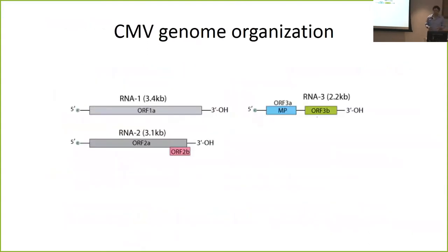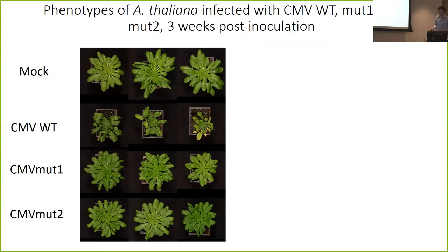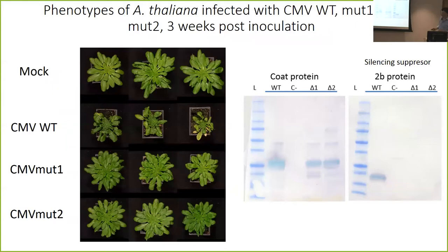To study this, our model is cucumber mosaic virus, or CMV. I'm showing a diagram of its genome. There are three RNAs, and the ORF 2B corresponds to the protein that has silencing suppressor activity. We've developed a couple of mutants for this protein and infected Arabidopsis thaliana plants. After three weeks post-inoculation, on the top we have the mock plant, the uninfected. The second corresponds to plants infected with the wild-type version of CMV, and the two lower panels correspond to plants infected with the mutated version — as you can see, they're pretty much asymptomatic. We know the virus is replicating because we can detect the coat protein in all plants, and as a control, we do not detect the silencing suppressor protein in our mutants, as expected.